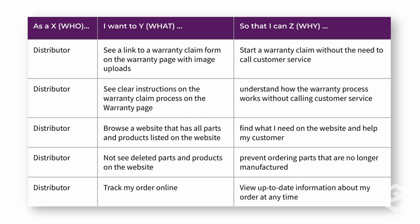What I want you to notice about this format is that we are spending no time on the solution — the how. This is critical to understand. A UX roadmap is not a list of tasks or a project plan. It is a strategic, vision-oriented document. The how is for your tactical team to worry about another day. For now, we are focused on what we are solving, for whom, and why.